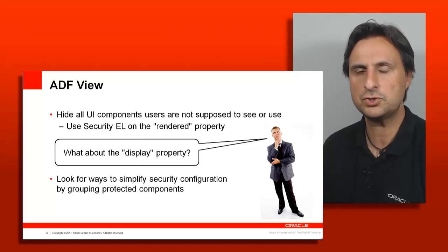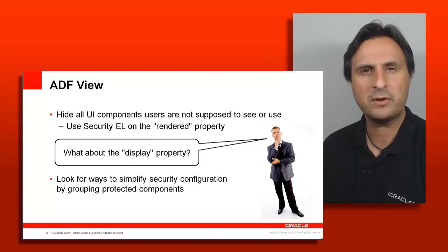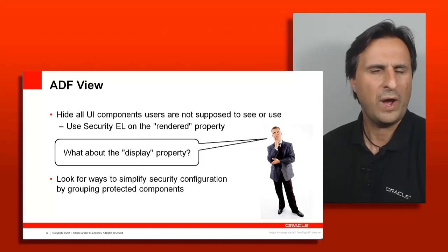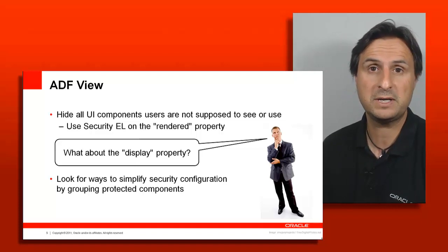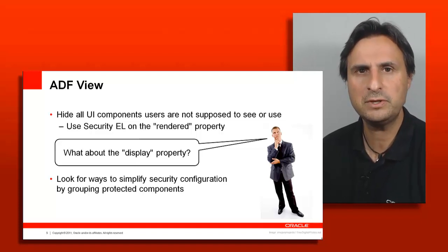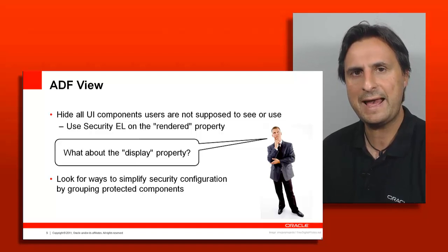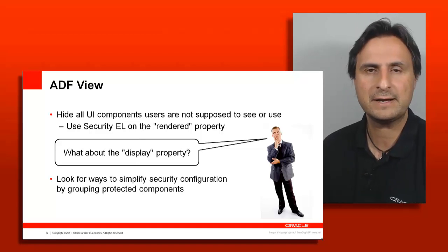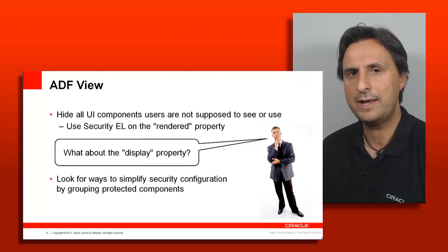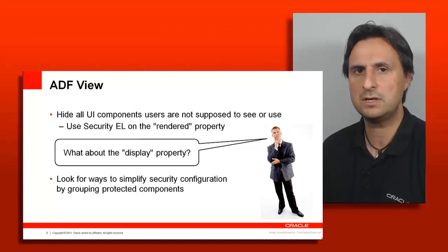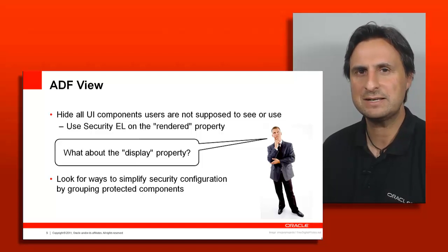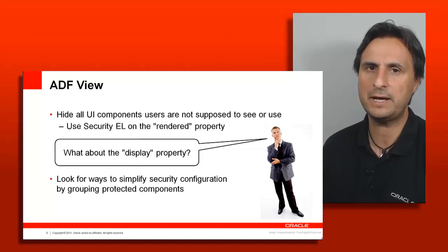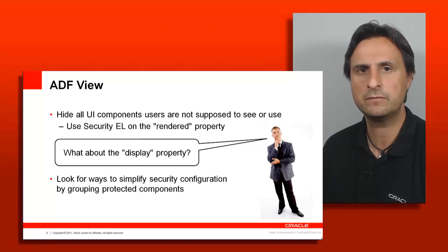Don't gray out components — just hide them. And rather than setting the display hint to 'hidden,' which only renders a hidden field in the page HTML and is less secure, use the rendered property when possible. The display property still emits the hidden field, which an attacker can inspect, so the rendered property is the more secure choice.